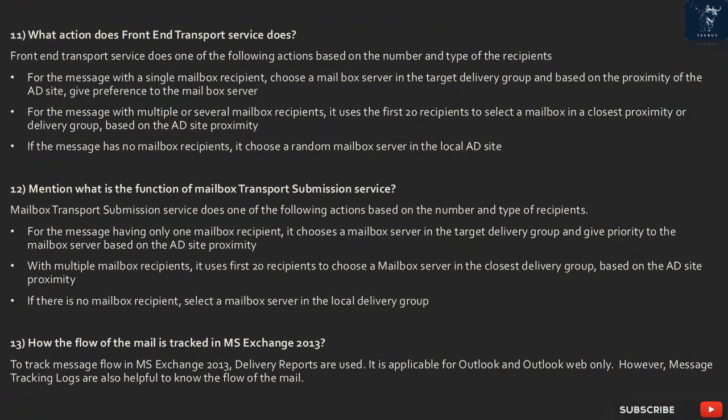Question 11: What actions does the front-end transport service perform? The front-end transport service does one of the following actions based on the number and type of recipients. For a message with a single mailbox recipient, it chooses a mailbox server in the target delivery group and, based on AD site proximity, gives preference to the closest mailbox server. For messages with multiple mailbox recipients, it uses the first 20 recipients to select a mailbox in the closest delivery group based on AD site proximity. If the message has no mailbox recipients, it chooses a random mailbox server in the local AD site.